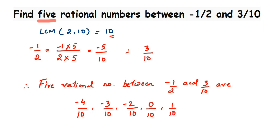So these are the 5 rational numbers between -1/2 and 3/10. I hope this question is clear. If you have any further questions or doubts, you can drop a comment. Thank you so much for watching.